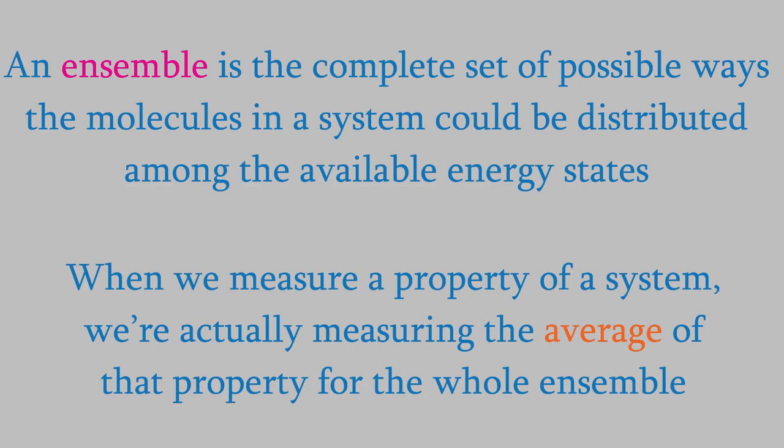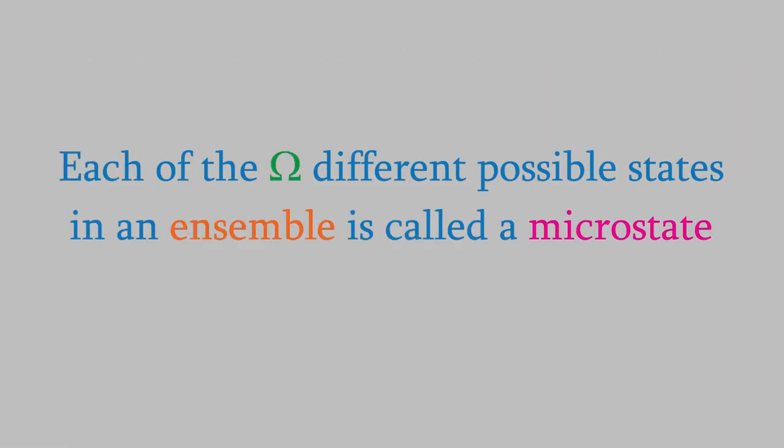As I mentioned, the number of possible states a system could have is huge. Each of the possible states is called a microstate, and the total number of microstates a system has is given by the symbol capital omega, Ω.